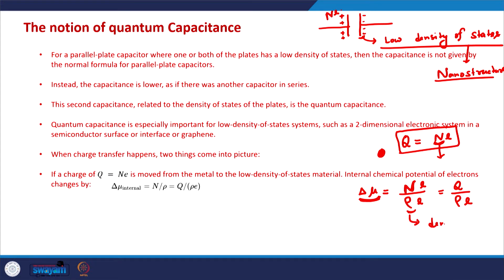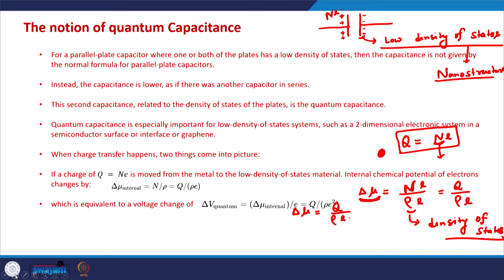If we multiply by the electronic charge, the change in electrochemical potential will be Q divided by ρ times e, where ρ is the density of states. We also use G or capital D for density of states — ρ is also used at some places, so do not confuse this — it is just the density of states of the nano system. The change in voltage is the change in energy divided by the charge, considering only the number part, not the electrostatic part.